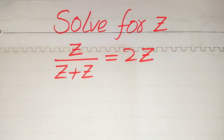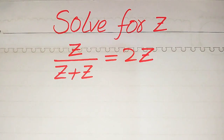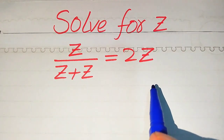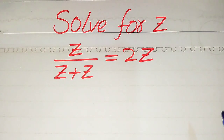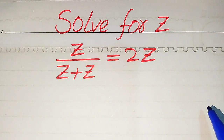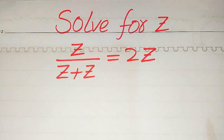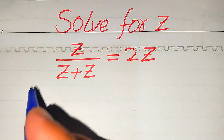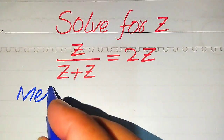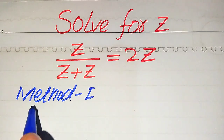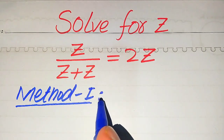Hello everyone. How to solve this problem: find the values of z if z divided by z plus z is equals to two times of z. We solve this for all values of z. First we find all the roots of this equation, and at the end we verify which of the roots are solutions and which are extraneous roots. We solve this problem for two methods.